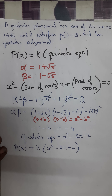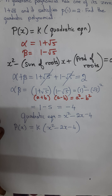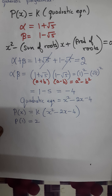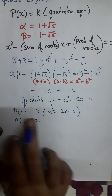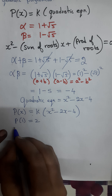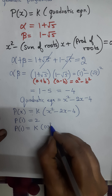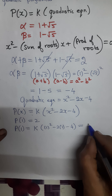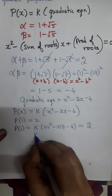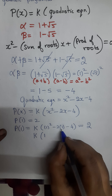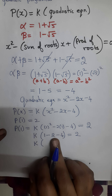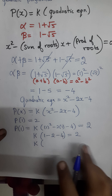The most important work now is to find k. The clue given in the question is p(1) equals 2. Using that, wherever x appears I substitute 1. So p(1) equals k times (1 squared minus 2 times 1 minus 4), and this equals 2. Simplifying inside the bracket: 1 minus 2 gives minus 1, and minus 1 minus 4 gives minus 5.